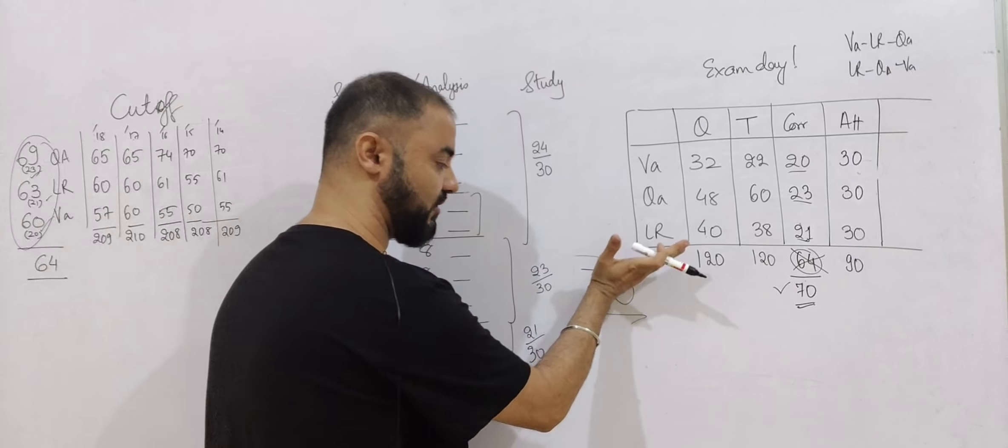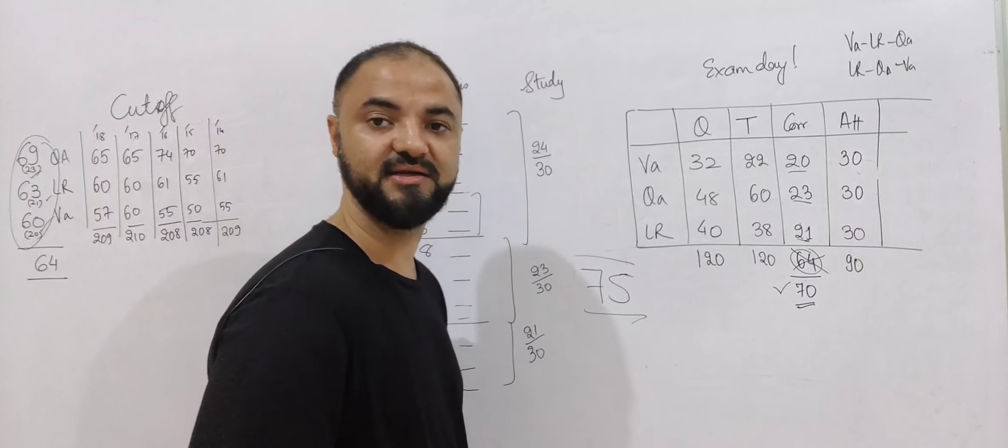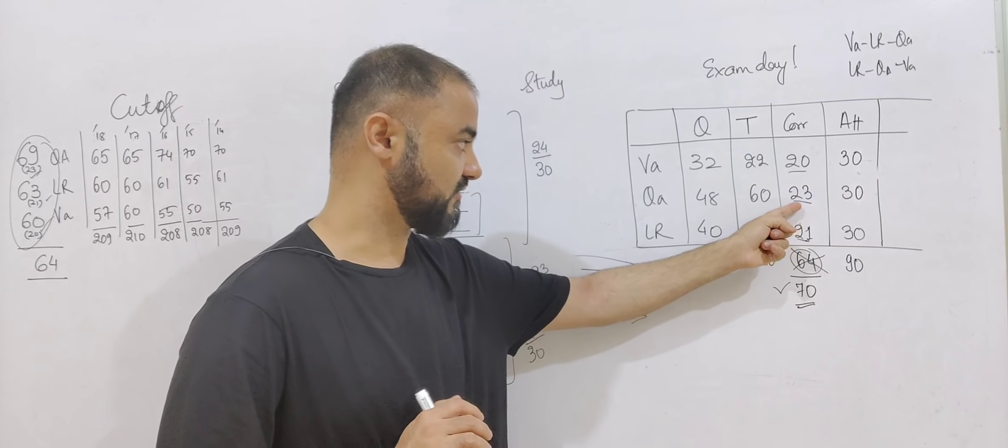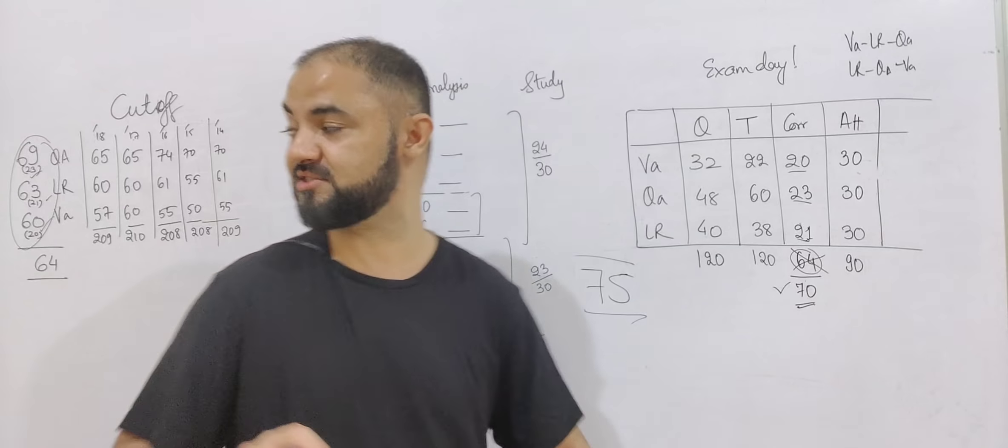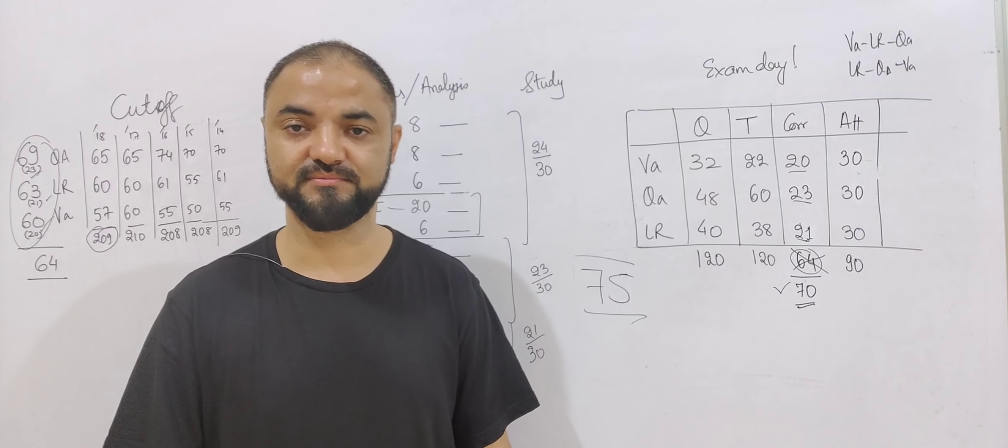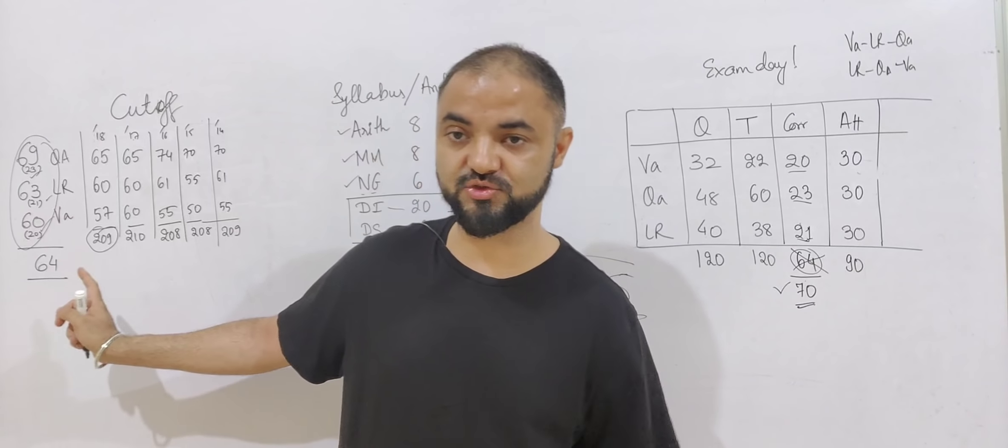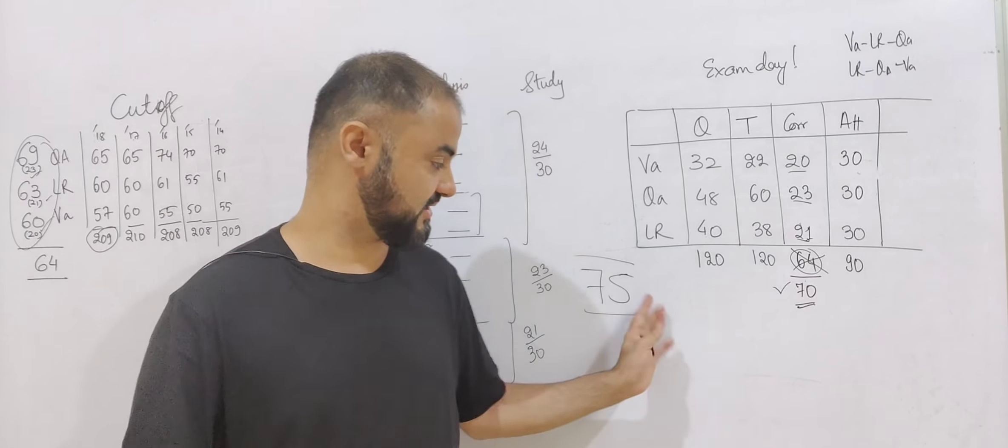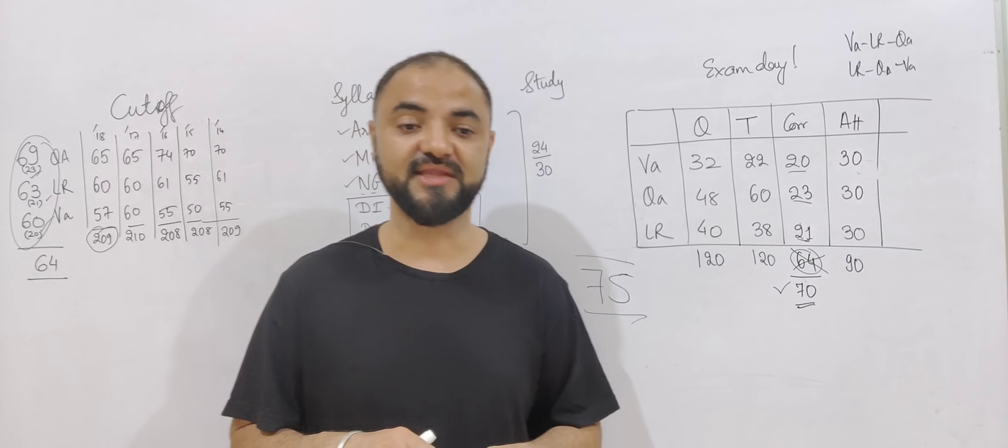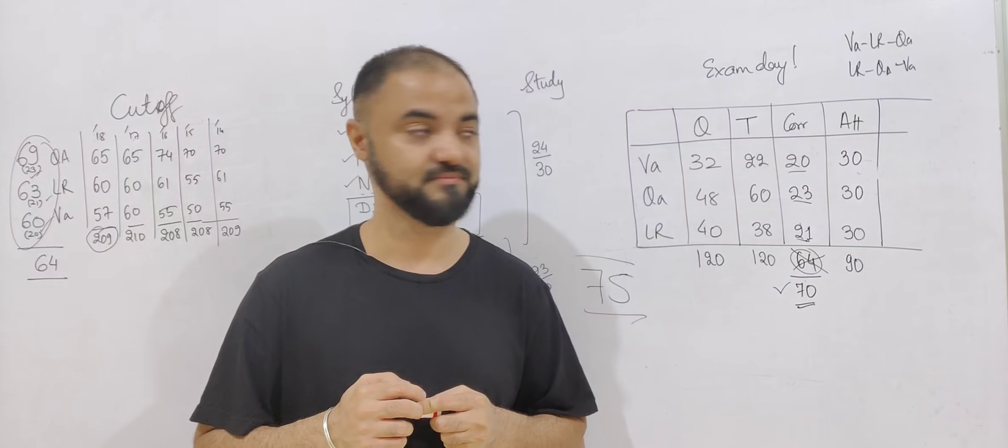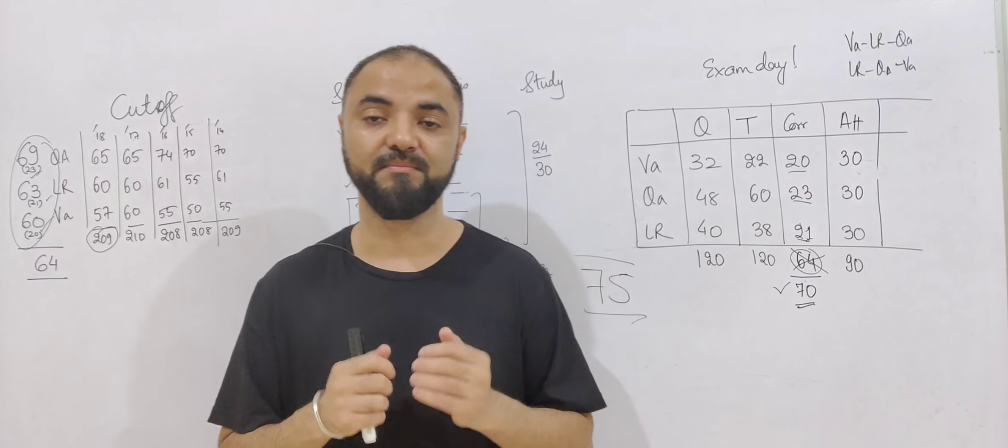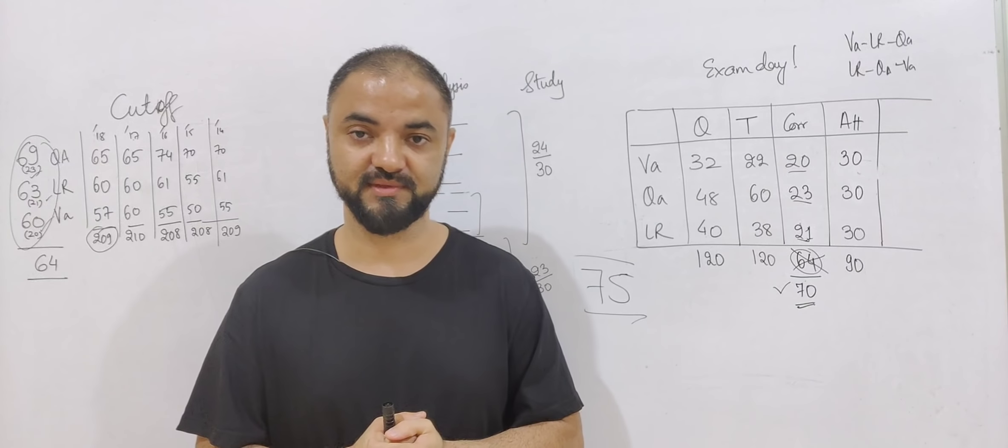Your target is not 64, your target is minimum 70 questions correct. 70 or if you want you can target even higher, 75 questions correct. That is your target. So there are four cutoffs: you have cutoff for verbal, cutoff for quant, cutoff for logic, and overall cutoff of 210-209 which I'm making 75 questions correct. 3 marks into 70 is 210. So we'll target 75 questions correct, that's your target score. 75 score means around 220 score, 215 plus. Then in GDPI we have very good chance to convert. And overall attempt has to be 90 plus overall because there's no negative marking.